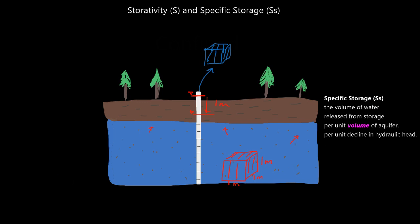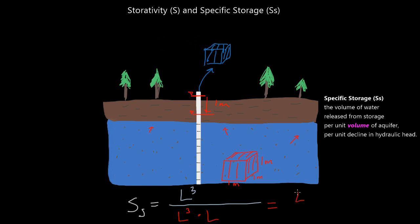Let's look at the units. Specific Storage equals the volume of water — that's length cubed — released from storage per unit volume of our aquifer, so that's another length cubed, per unit head change, which is another L. So we're left with L³ divided by L³ times L, which gives us 1 over L. So 1 over length is our unit for Specific Storage.